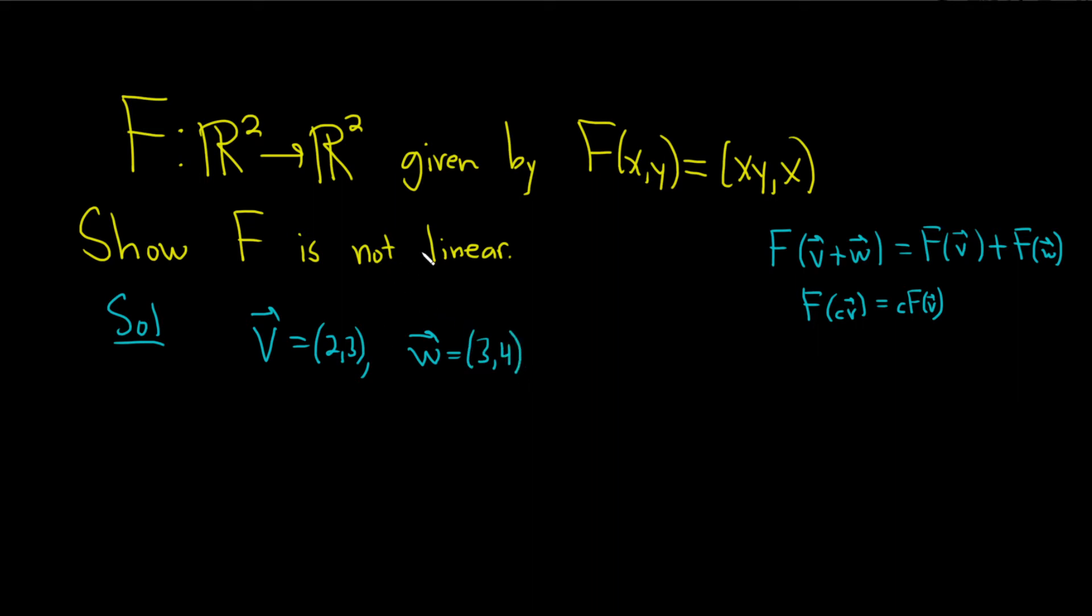So if we add these up, we get v plus w. And this is equal to 2 plus 3 is 5, and 3 plus 4 is 7.